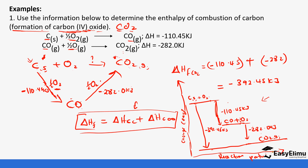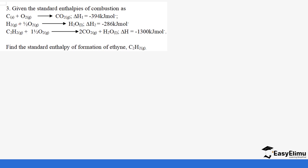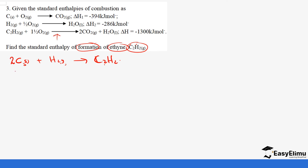Given the standard enthalpies of combustion provided, find the standard enthalpy of formation of ethyne C₂H₂. Ethyne is formed from carbon and hydrogen. We start by writing: 2C(s) plus H₂(g) to form C₂H₂. In the product we have two carbons, so we balance by putting two in front of carbon on the reactant side. When doing Hess law cycle diagrams, the first formation equation's product should not be interfered with — we always balance the reactant side. We can use even halves.